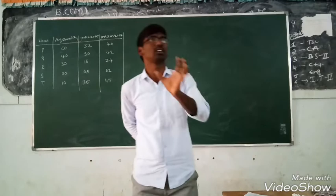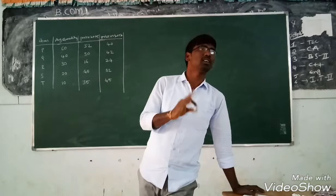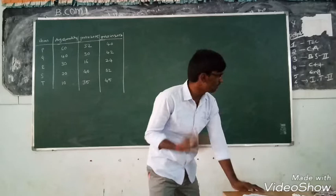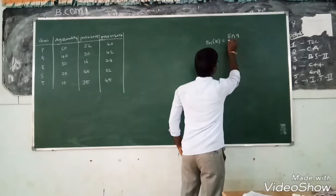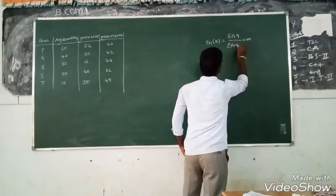This is the question to calculate index number according to the Kelly's formula. What formula given by Kelly? Summation P01 of Kelly's equal to summation P1 Q divided by summation P0 Q into 100.